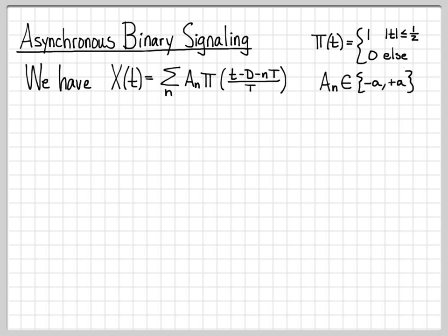The amplitudes of each pulse toggle randomly between minus a and a. We're going to assume that these pulse amplitudes are independent, meaning pulse 1's amplitude is independent of pulse 2, which is independent of pulse 3, and so on.